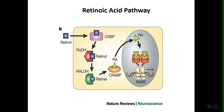Vitamin A is required for this pathway, and the mother can take that in with carrots, liver, stuff like that. Once vitamin A is in the mother, some of it will turn into retinol. And retinol is highly teratogenic. It can pass through the placenta very easily, because it's very hydrophobic and small. So it passes through the placenta and gets closer to the fetus.